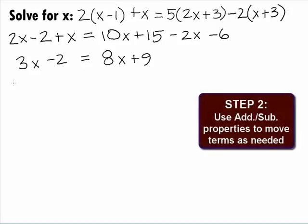In Step 2, we want to use the addition and subtraction properties of equality to move the variable term on one side and all other terms to the other side. Let's go ahead and move the 8x that is on the right side over so that we have our x term on the left side.